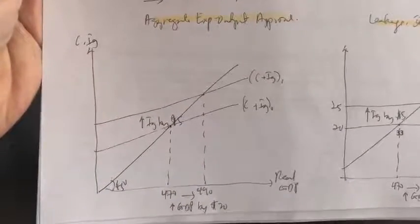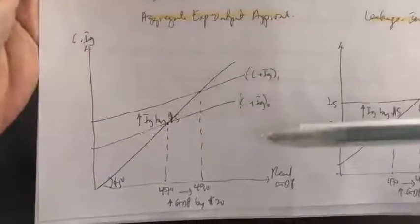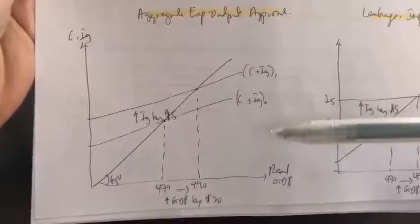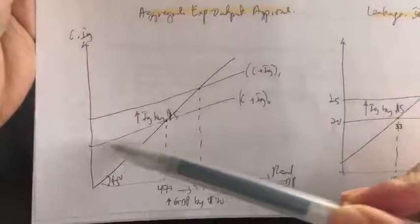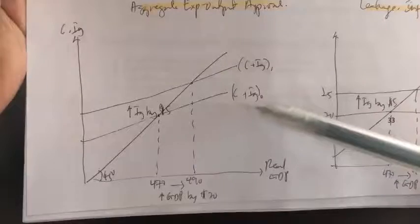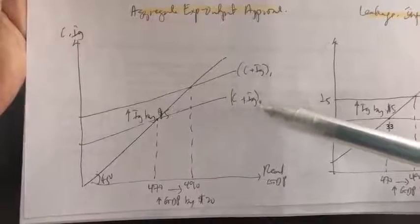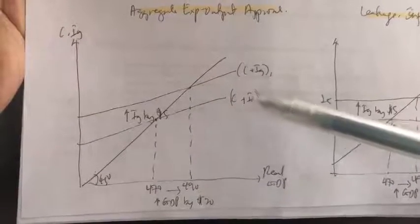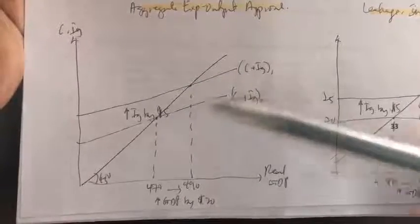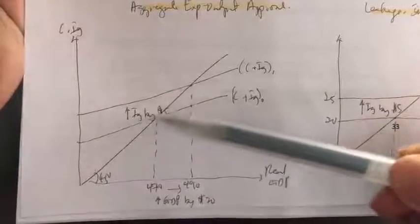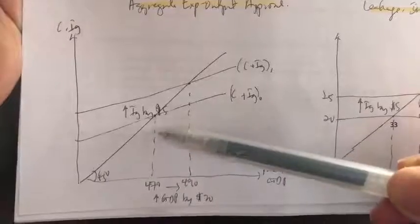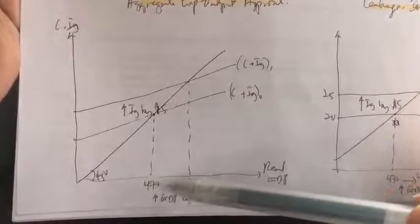In the aggregate expenditure and output approach, we can visualize it using the Keynesian cross. Now, pay attention first to this first line. This is C plus IG initially, meaning when interest rate was at 8%, our investment schedule was $20 billion. Okay, so this is the line. And this is the equilibrium real GDP at $470 billion output.